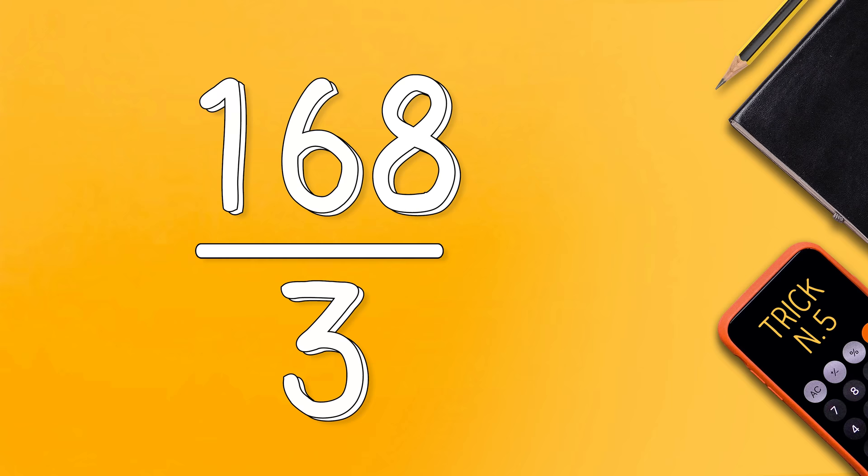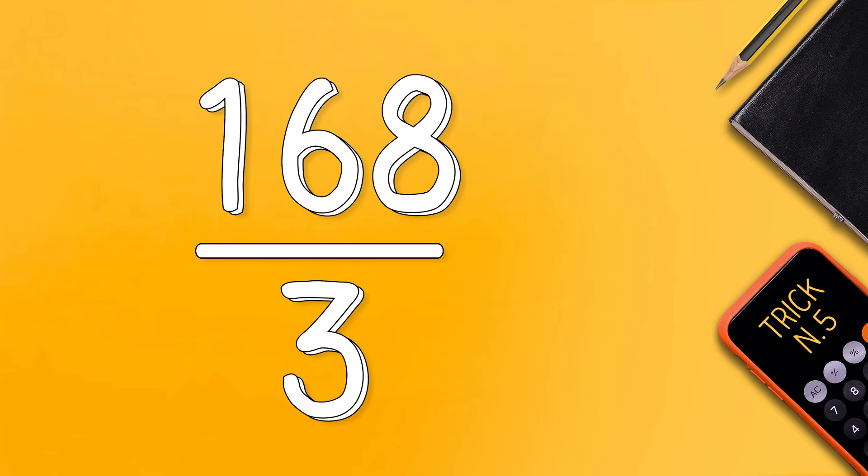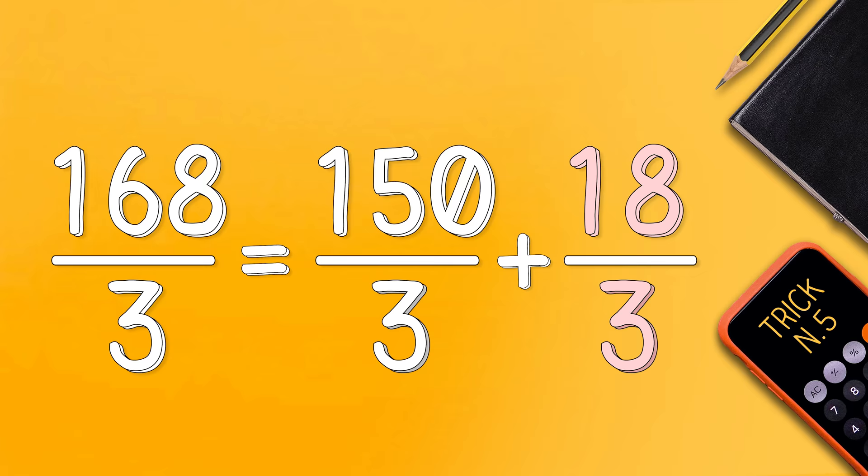If instead you can't immediately find multiples in the number on top, you can try to decompose the number. So 168 becomes 150 and 18, both multiples of 3. And this gives us 56.